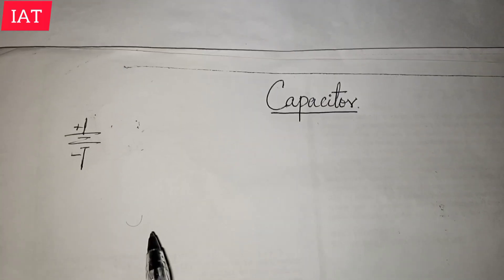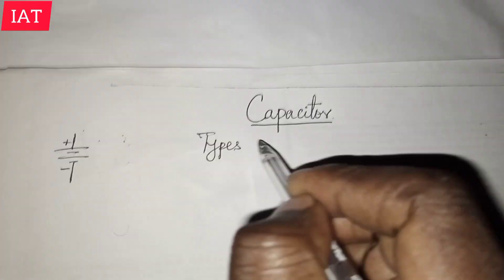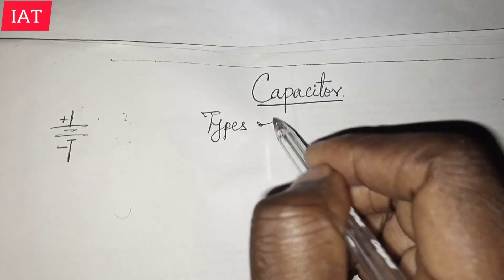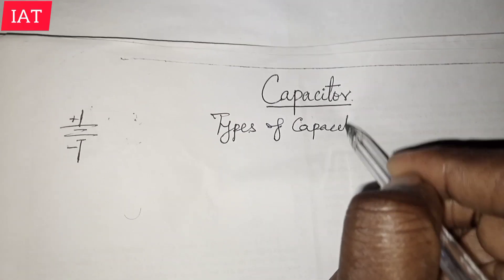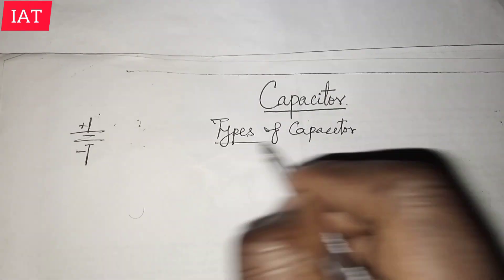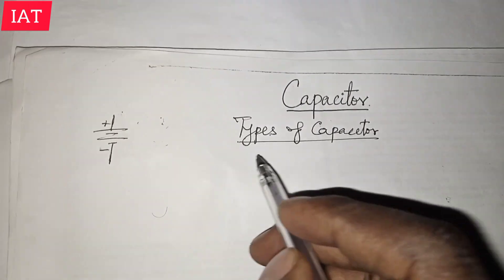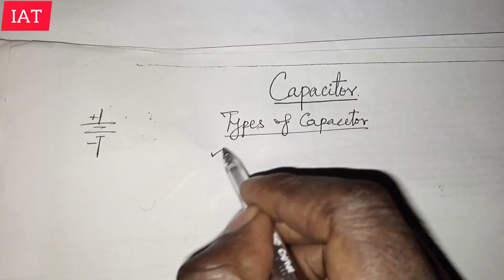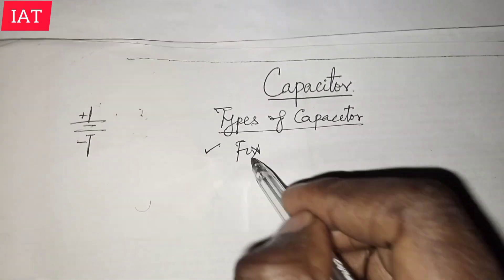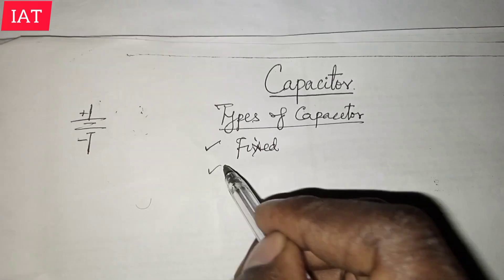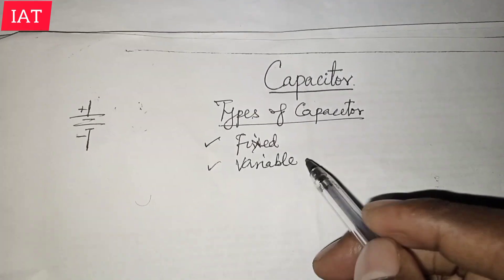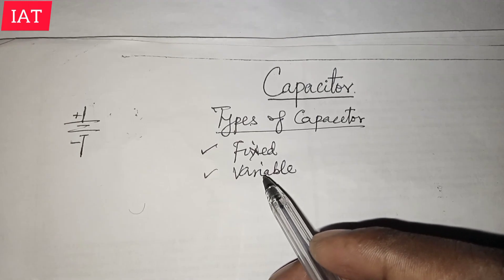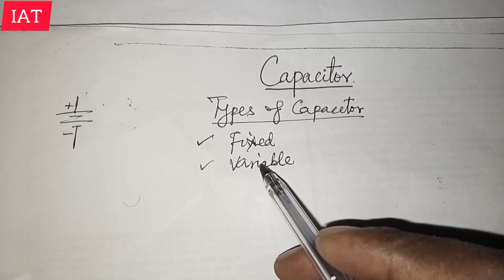We have types of capacitors. In simple terms, capacitors have two major types: the first one is a fixed capacitor and the second one is a variable capacitor. Every other type of capacitor you would have seen falls under one of these two categories.